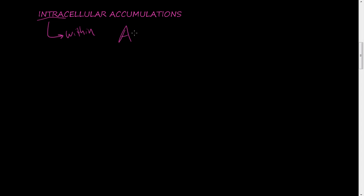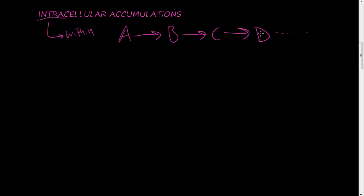Remember from a couple of videos ago, we talked about pathogenesis - the mechanism by which A is converted to B, which is converted to C, which is converted to D, and so on. Everything starts at a biochemical or molecular level and then converts over time up to a gross macroscopic morphology or appearance. So intracellular accumulations are a sign of where the disease is at along this pathway.